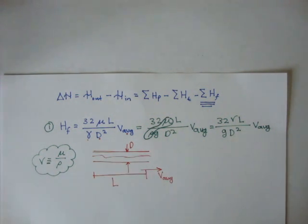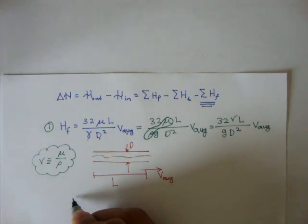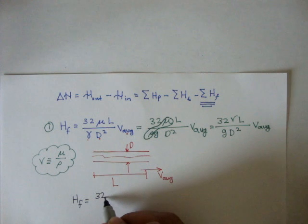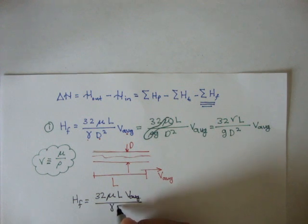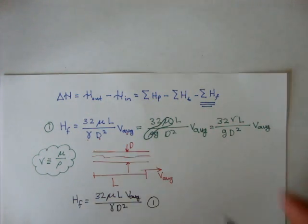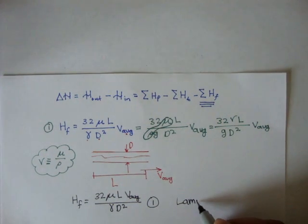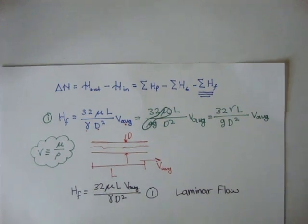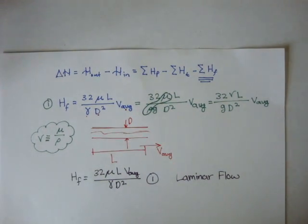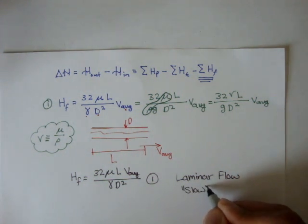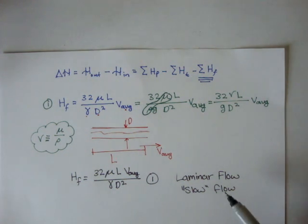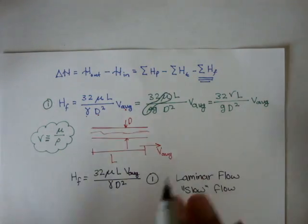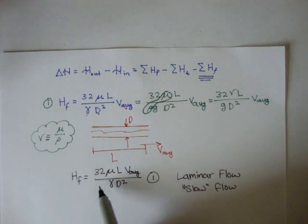One important thing to remember is that Equation 1 — HF equals 32 mu L times average velocity over gamma times D squared — only holds true for what we call laminar flow. Laminar flow is simply slow flow. If a fluid in a pipe is not moving very fast, we say that flow is laminar. We can only use Equation 1 for laminar flow.